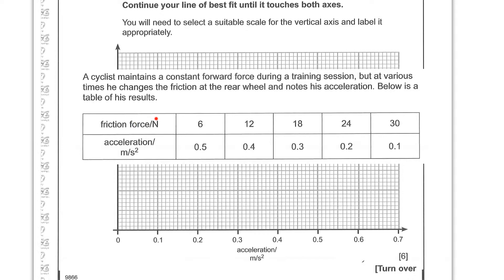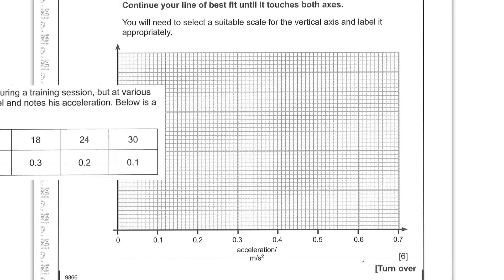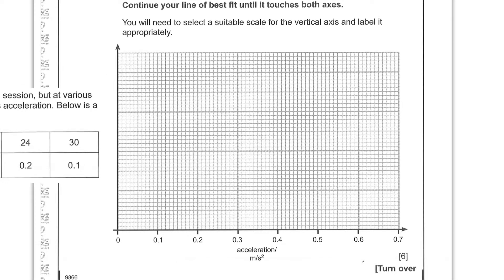So we have accelerations that go all the way to 0.5, and that scale will be suitable for that, the one that they put in. We have friction force that goes all the way to 30. So we need to look at the scale here and see what will work for 30. So if we count these squares in order to figure that out, we've got 1, 2, 3, 4, 4 and a half.